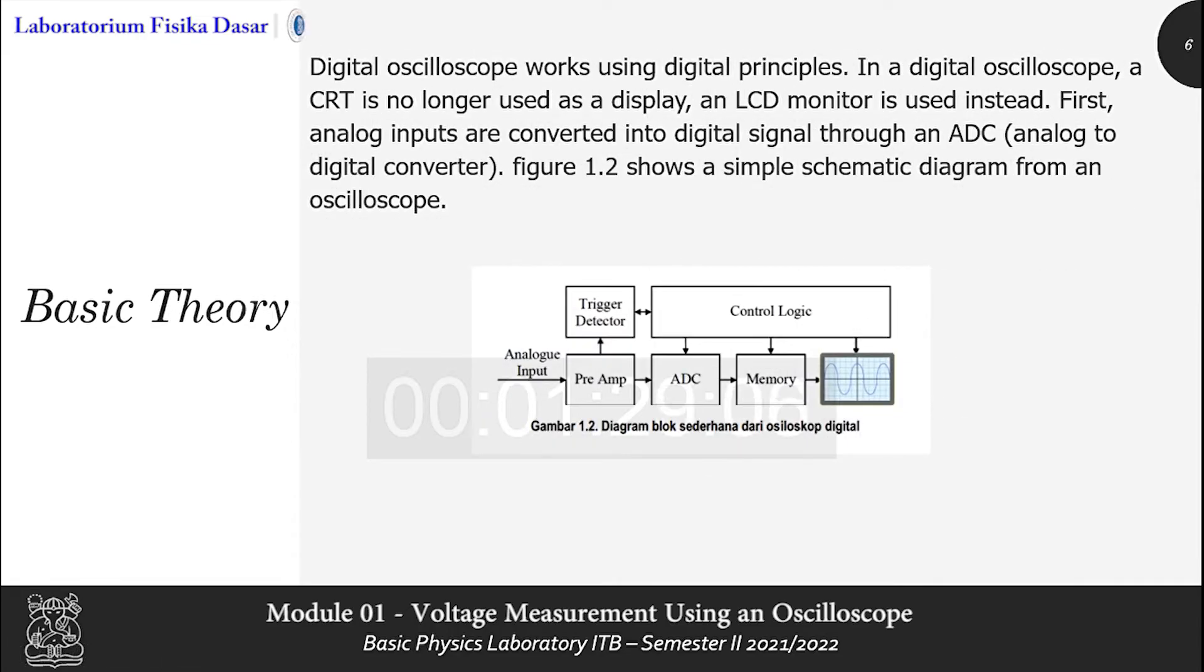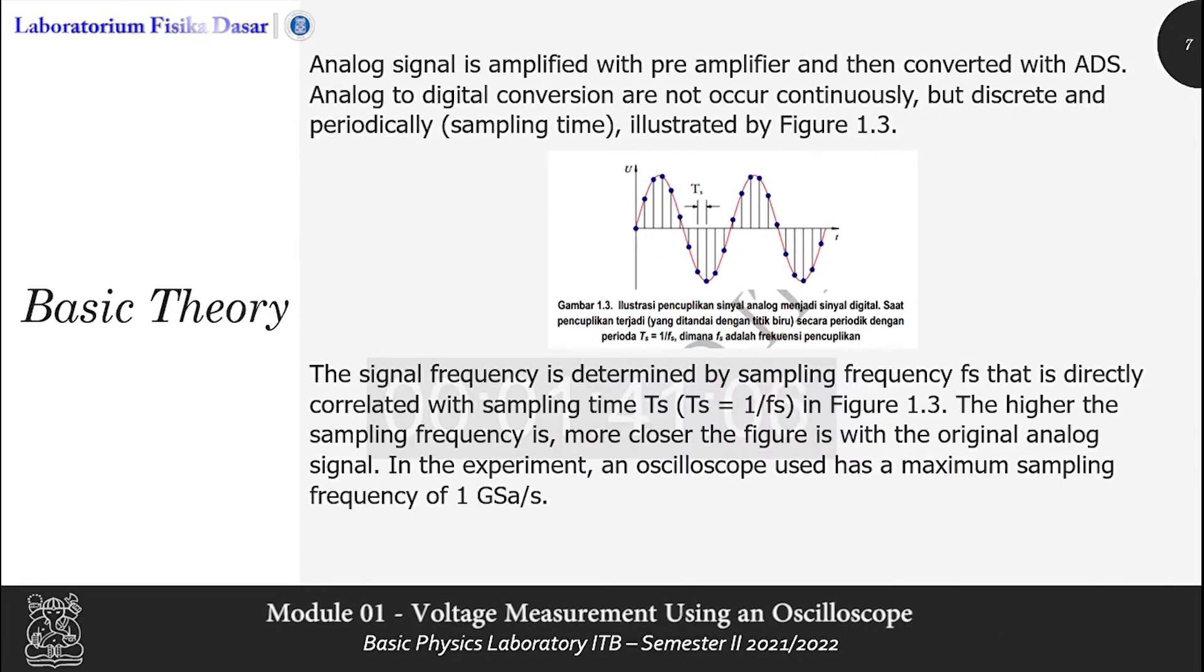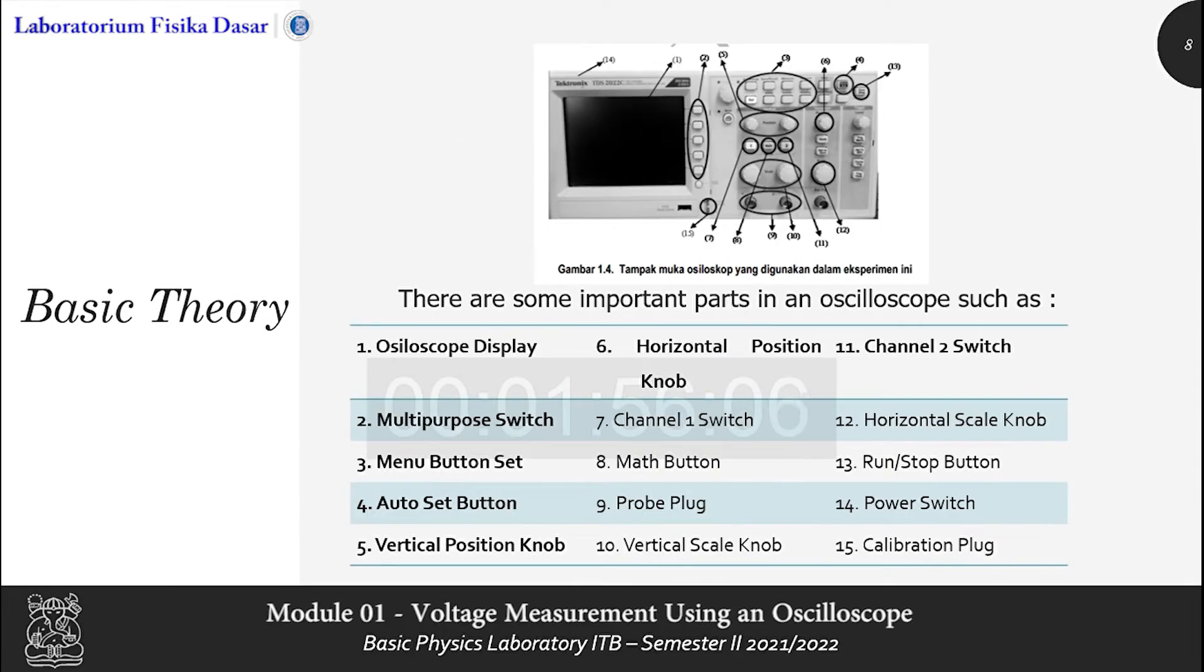Analog oscilloscope uses cathode ray tube or CRT that works under analog electronic principle. Digital oscilloscope works using digital principles. In a digital oscilloscope, a CRT is no longer used as a display. An LCD monitor is used instead. Analog signal is amplified with pre-amplifier. The signal frequency is determined by sampling frequency that is directly correlated with sampling time. These are some important parts in an oscilloscope.